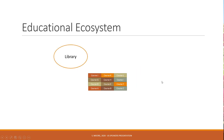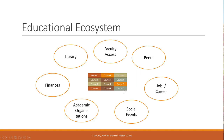Around this curriculum we may have different sources of support like the library, finances, access to academic organizations, social events, job and career training and support, access to peers, the ability for learners to collaborate and connect with each other to study together, as well as access to teachers. Each of these and more are really part of an important educational ecosystem, so we want to be thinking about how we can build in those different types of access for our learners.